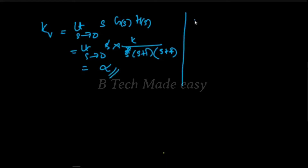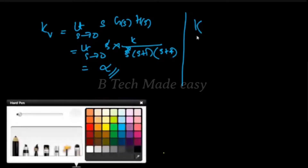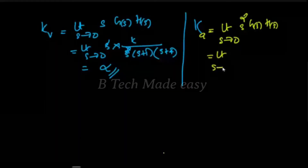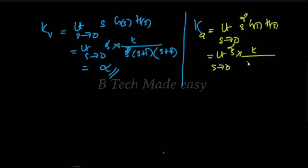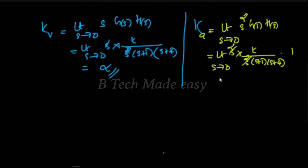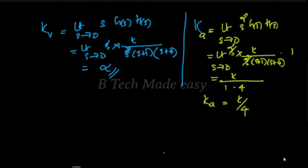What is the value of Ka? Ka is equal to limit as s tends to 0 of s-squared times G(s)H(s). That is: limit s tends to 0 of s-squared into K divided by s-squared times (s+1) times (s+4), times 1. The s-squared cancels, giving K divided by (0+1)(0+4), so Ka equals K divided by 4.